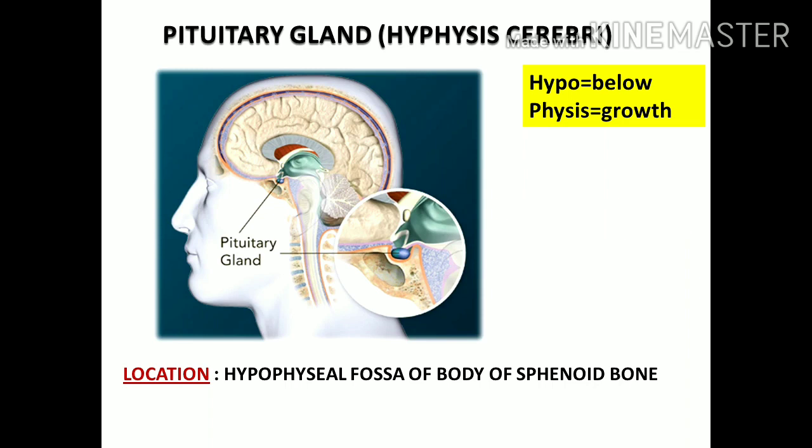The pituitary gland is located in a depression called the hypophysial fossa or pituitary fossa. This hypophysial fossa is a depression in the body of the sphenoid bone, and this part is also called the sella turcica. Because of this particular location, the pituitary gland is also called hypophysis cerebri — hypo means below, physis means growth.